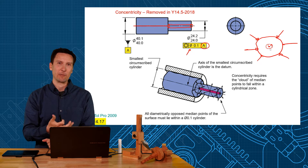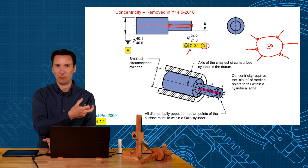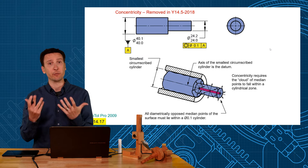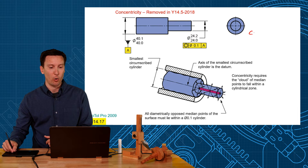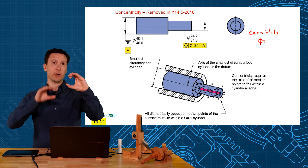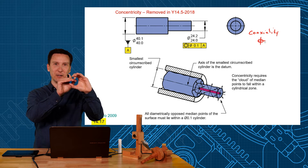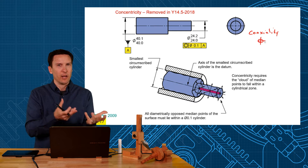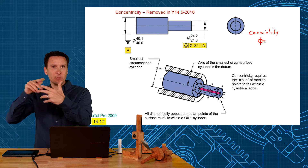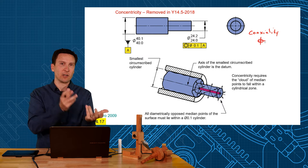Pretty weird. And that was the specification in the 2009, 1994, and all the way back to the 1982 standard. The problem is it got confused all the time with coaxiality. Coaxiality is one axis related to another axis — we control that with position tolerance. Someone from the standards meeting wanted this cloud of midpoints for high-speed balance, so they invented concentricity.